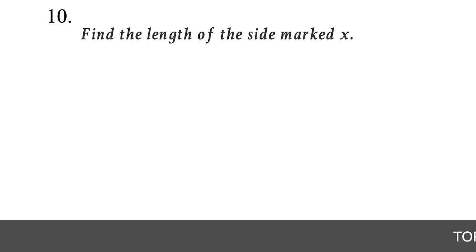Question 17. Multiply the polynomials (2x + 3) and (2x - 4). Multiply each term in the second parenthesis by each term in the first: 2x × 2x = 4x², 2x × (-4) = -8x, 3 × 2x = 6x, 3 × (-4) = -12. This is known as the FOIL method. Combine like terms: -8x + 6x = -2x. The final answer is 4x² - 2x - 12.